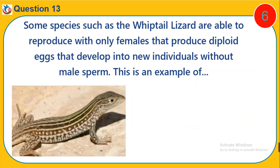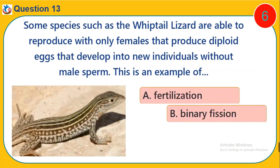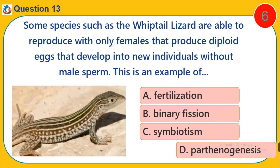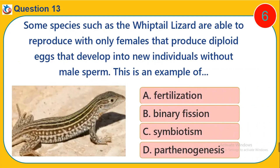Question 13. Some species, such as the whiptail lizard, are able to reproduce with only females that produce diploid eggs that develop into new individuals without male sperm. This is an example of: A. Fertilization. B. Binary Fission. C. Symbiosis. D. Parthenogenesis.